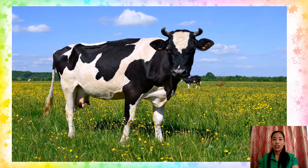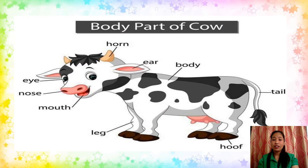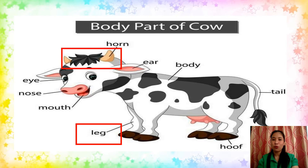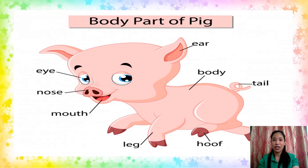Let's have the farm animals — just like a cow. A cow provides useful products such as beef and milk. What are the body parts of a cow? A cow has a pair of horns that protect it from other animals. It has four strong legs to support it when it carries a heavy load or pulls a loaded cart. A cow also has its body, tail, hoof, and head. Another farm animal is the pig, which has its body, head, leg, hoof, and a funny tail.